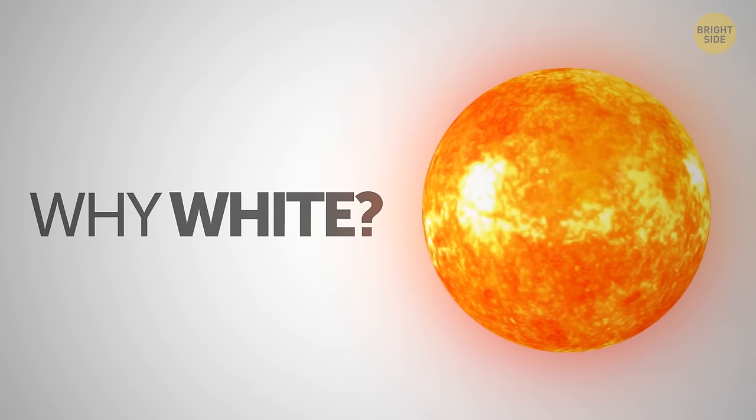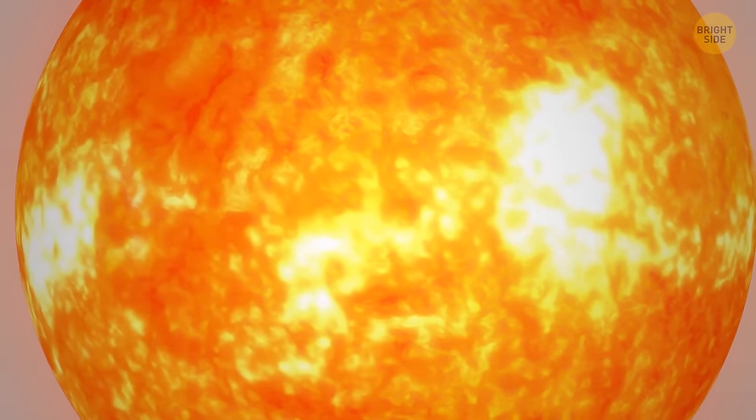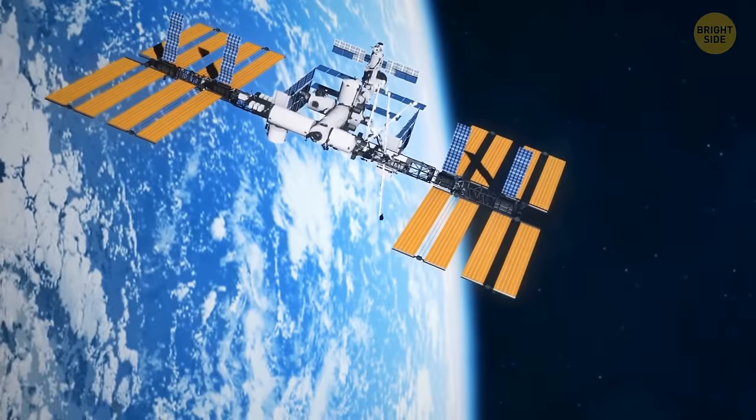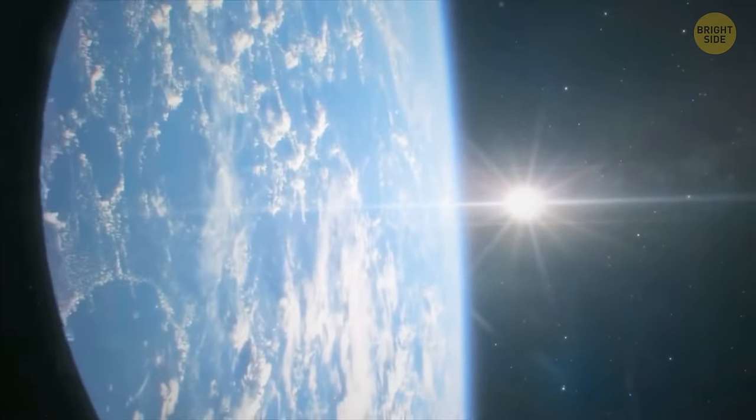Why white? Isn't the sun yellow? Yep, it's yellow too. But please, don't stare at the sun just to make sure. It appears white when we see it from the International Space Station. This is the sun's real color as our eyes perceive it.